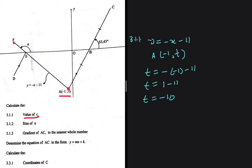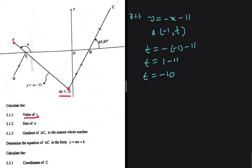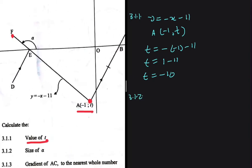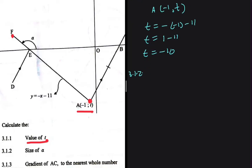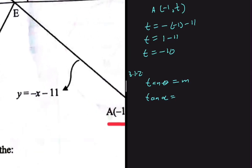For 3.1.2, we're looking for the size of angle alpha, which is the angle of inclination shown here. To find an angle of inclination, we use the fact that tan of theta equals the gradient. So we have tan of alpha equals the gradient of line EF.